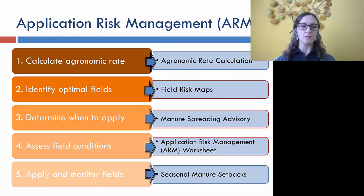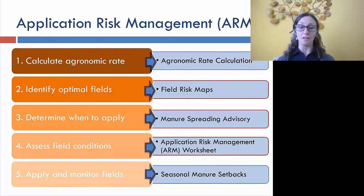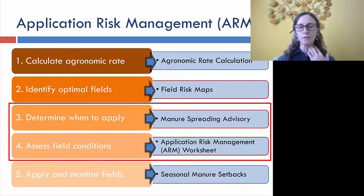We looked at this in our five steps of manure application. Step one: calculate agronomic rate — know how much you need. Step two: identify optimal fields using risk maps. Step three: determine when to apply — this is the use of the manure spreading advisory. Step four: assess field conditions using an application risk management worksheet. Step five: apply and monitor fields with seasonal manure setbacks. Steps three and four are what I'll cover today.